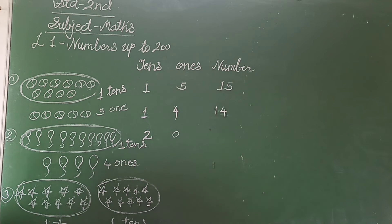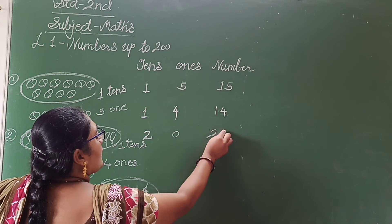So we will count the total number of stars. Count it 1, 2, 3, 4, 5, 6, 7, 8, 9, 10, 11, 12, 13, 14, 15, 16, 17, 18, 19 and 20. So total I have 20 stars.